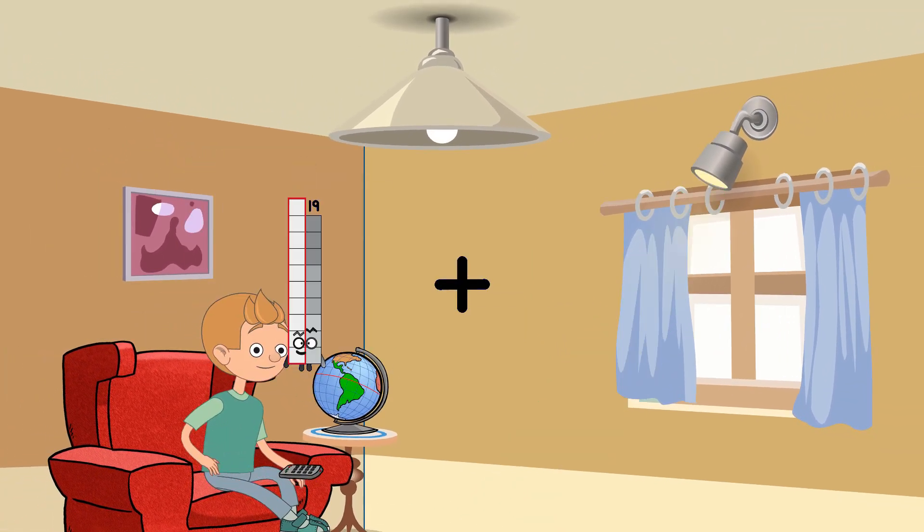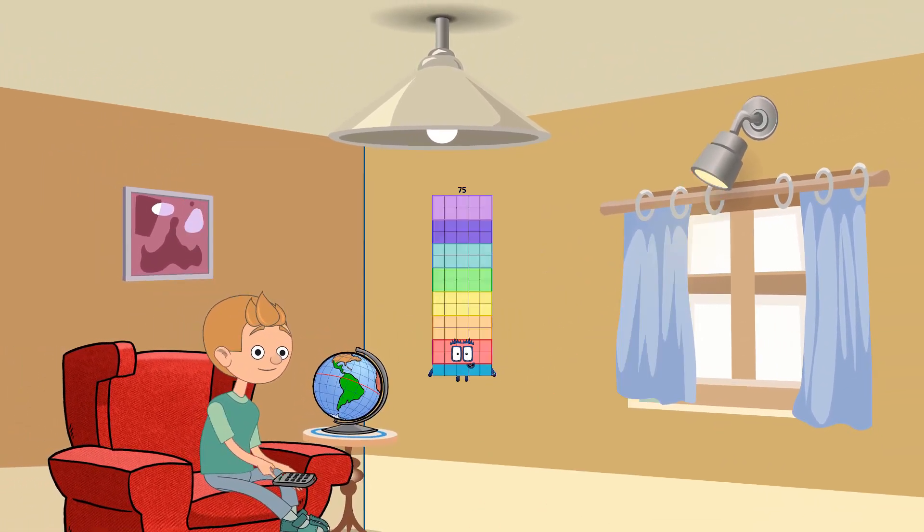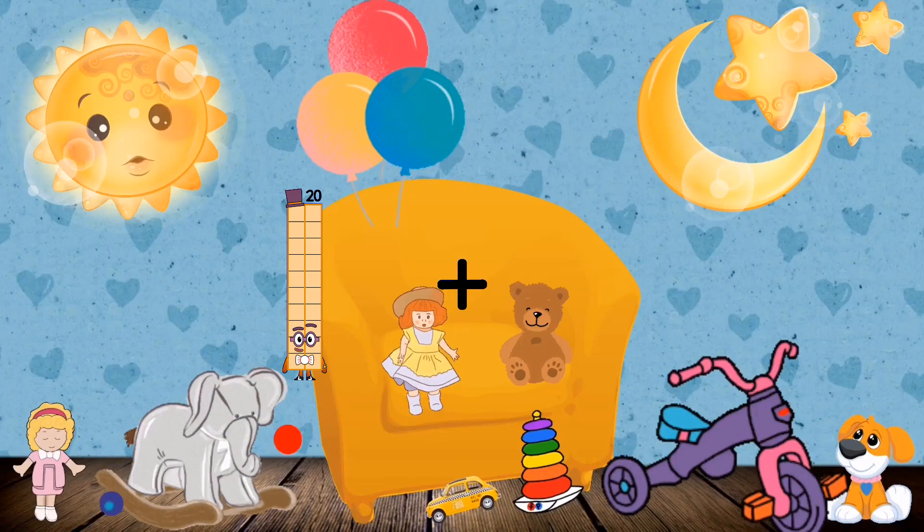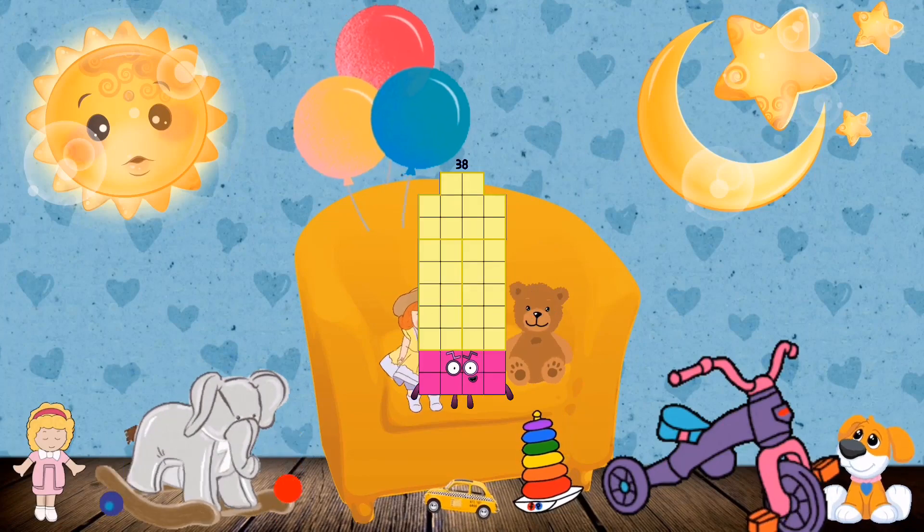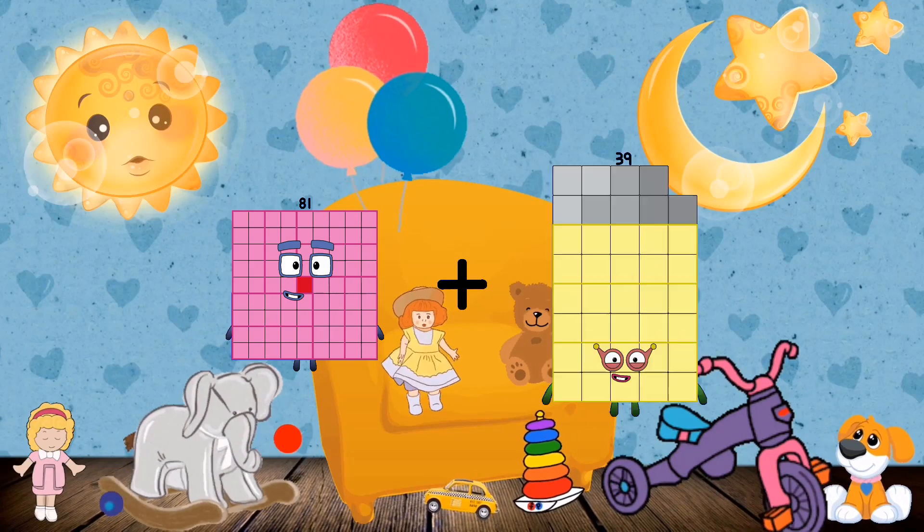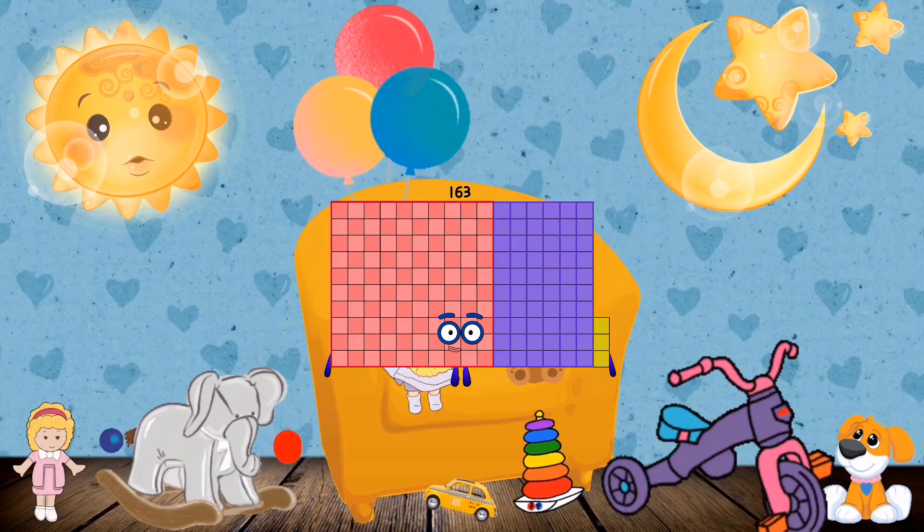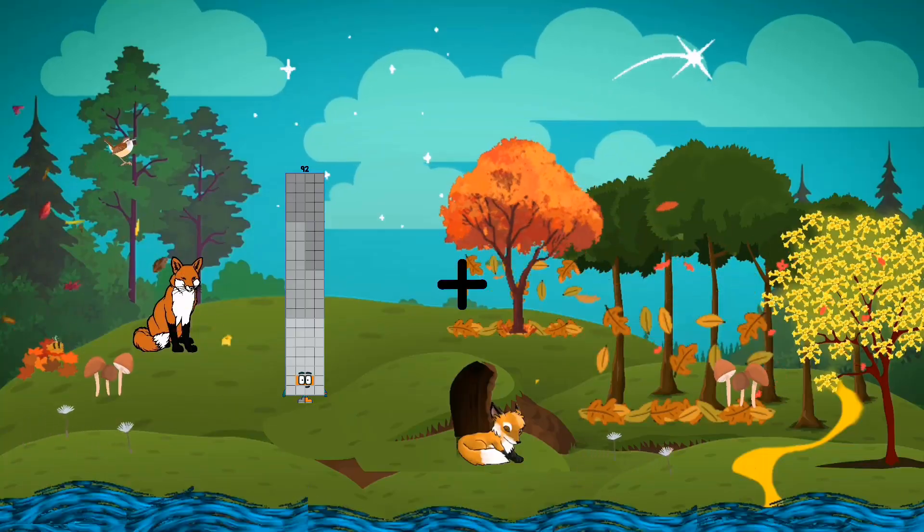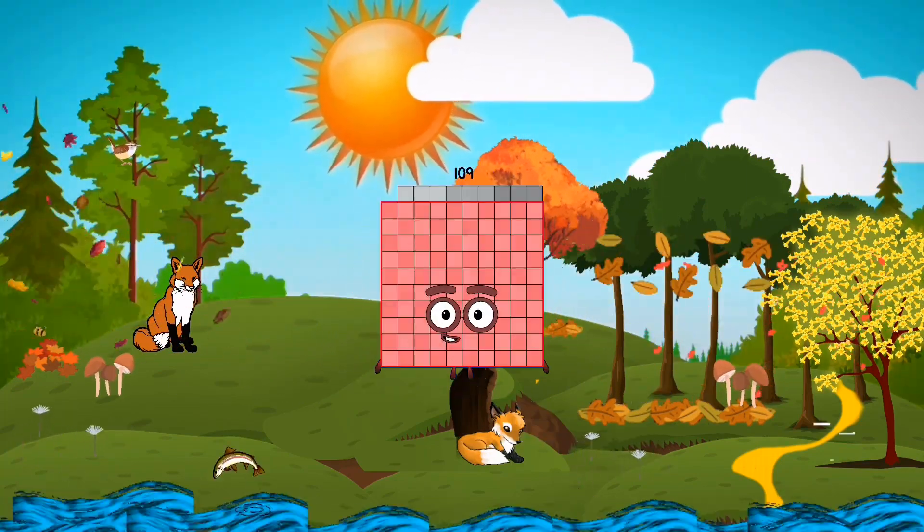19 plus 56 equals 75. 20 plus 18 equals 38. 81 plus 82 equals 153. 92 plus 17 equals 109.